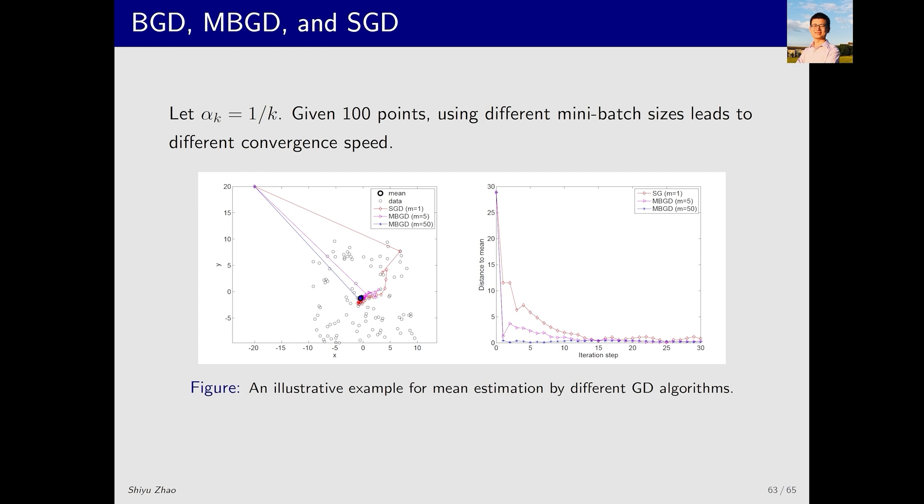Next, let's look at a simulation result. We have introduced this result before but I will explain it again. We have a 20 times 20 region and we uniformly sample 100 points within it. We then apply these 100 points to the three algorithms we just discussed and observe their convergence behavior. In the figure, the red line represents SGD. As you can see, it converges relatively quickly, moving directly to the target region and then gradually converging to the true mean.